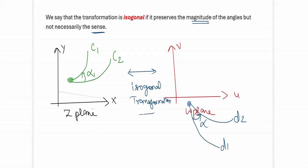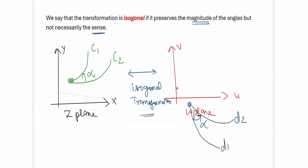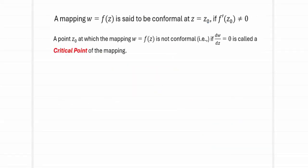So the difference is clear: a conformal transformation is one that preserves both magnitude and sense. If it preserves only the magnitude but not the sense, the transformation is referred to as isogonal. Now, a mapping w = f(z) is said to be conformal at any point z = z₀ if the derivative at that particular point is not equal to zero. So if we can show that the derivative exists and is nonzero at a point, then the mapping is conformal at that point.